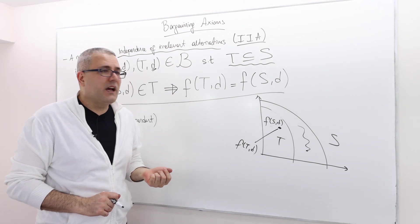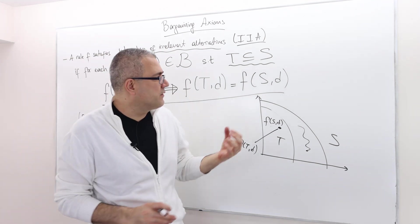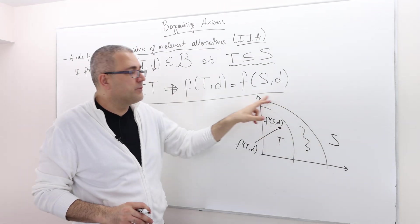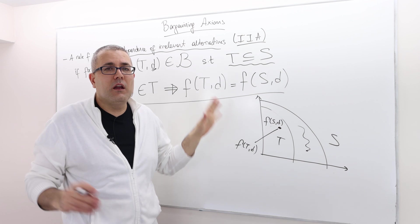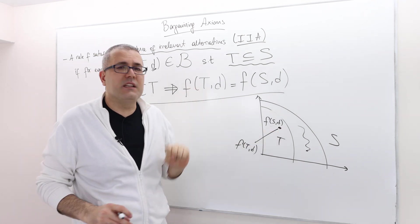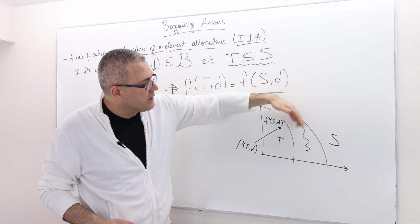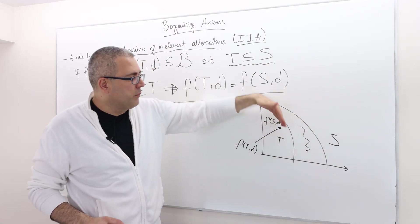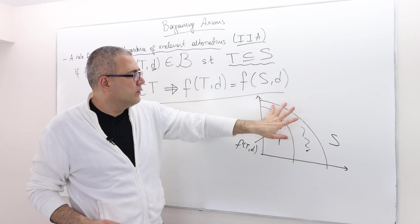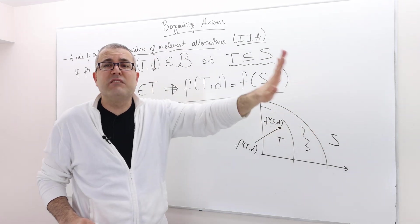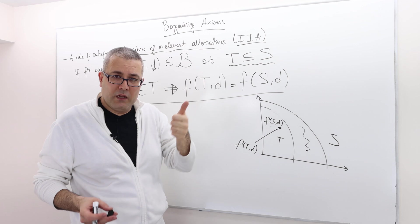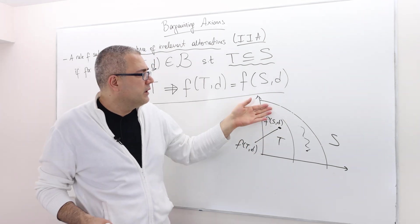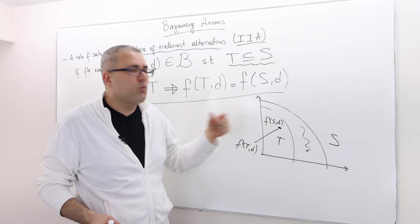Why is that? Well, think it this way: the rule selects this point in this bargaining set S. For some reason, it selects this point. Now I ignore some of those alternatives. When I look at this bargaining problem T, those alternatives are irrelevant because, one, they're not inside my set T. Two, none of them were chosen. This one was chosen.